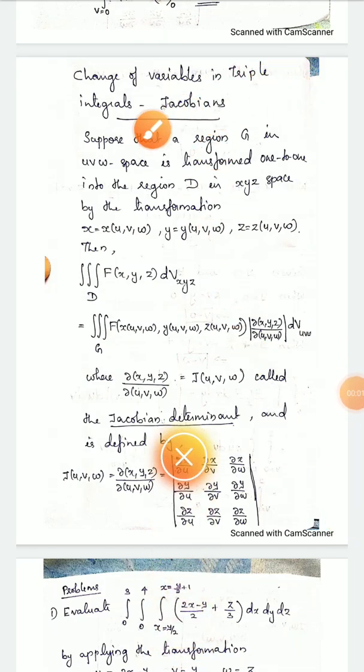Change of variables in triple integrals and Jacobians. We have done the double integral case with change of variables. In triple integrals, the variables are x, y, z, which we evaluate in u, v, w. The Jacobian in the double integral case is a 2x2 determinant, and in the triple integral case it is a 3x3 determinant. We have to change the variables.